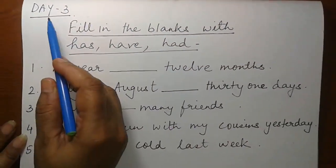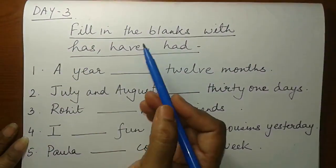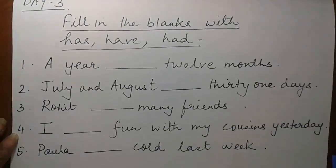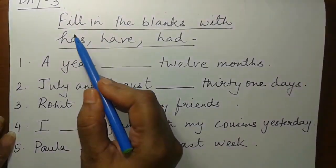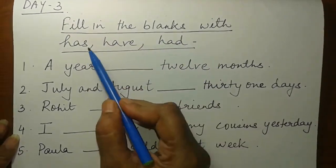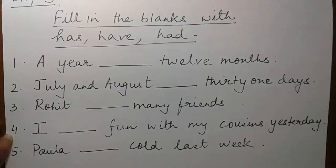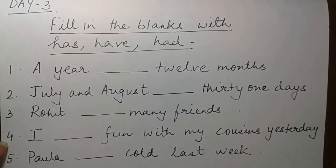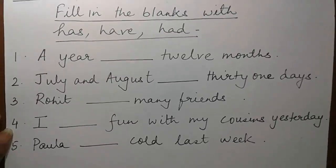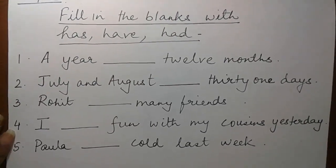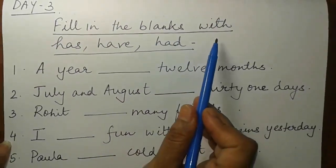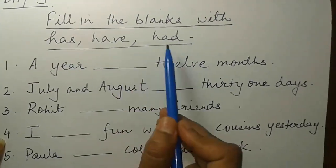Welcome children to the third day of the seventh session. Today we will also practice some has, have, and had — filling in the blanks with has, have, or had. Take out your pencil and the loose sheet and get ready. Write on the top: fill in the blanks with has, have, or had.